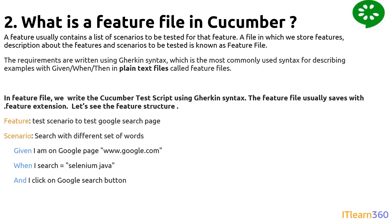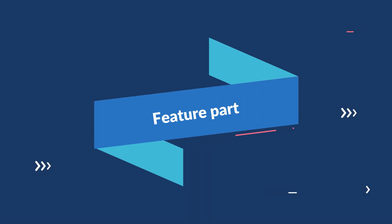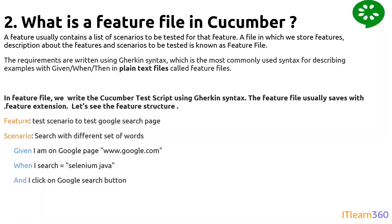Now let's understand what a feature file is in Cucumber. A feature file usually contains a list of scenarios to be tested for a feature — it's a file in which we store features, descriptions about features, and scenarios to be tested. We create a file with a dot feature extension, just like Java files use dot java. Inside this feature file we write test cases using Gherkin syntax. Both are connected — in the feature file we write Cucumber tests using Gherkin syntax.